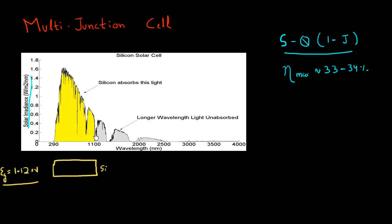Photons which have wavelengths above the cutoff wavelength for silicon — which is somewhere around 1100 nanometers — essentially just leak through. This slab of silicon is completely transparent to all those photons. But that is something we already know.